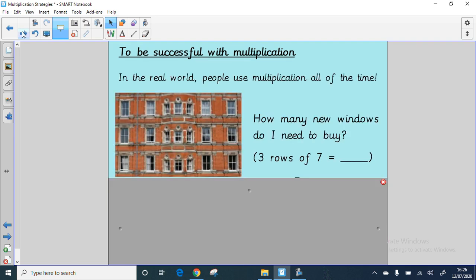In the real world people use multiplication all of the time. Here, how many new windows do I need to buy? Well, I can count them individually or I can see there are three rows and each row has got seven. Three rows of seven. You all know the answer or some of you are working out three times seven. So seven times three is 21.